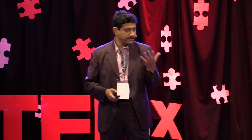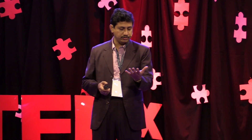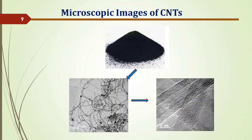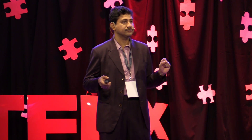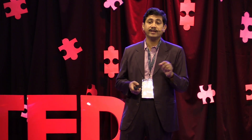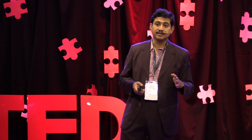When we see carbon nanotubes with the naked eye, they look like a simple black powder. But if we use transmission electron microscopy, we can actually see their tubular structure. And using high-resolution transmission electron microscopy, we can even see the atomic planes present in this structure.